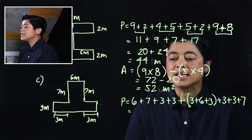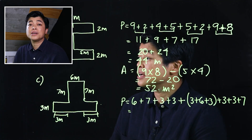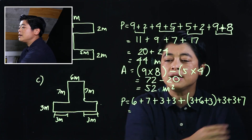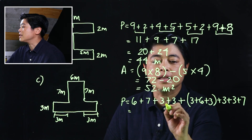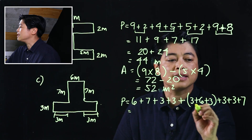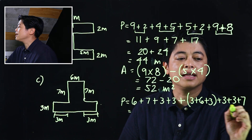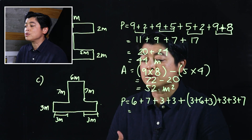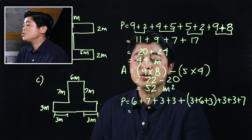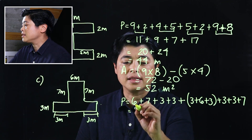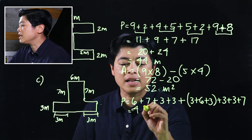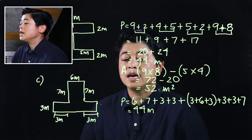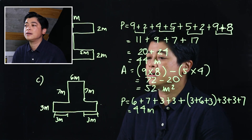Just like we did earlier, we can do it in pieces — that one first, then that one, then that one, then that one. I'll leave that for you to solve; you should get 44 meters as your final answer.